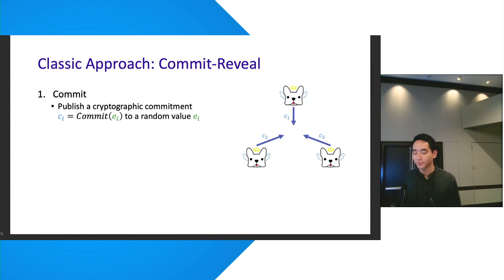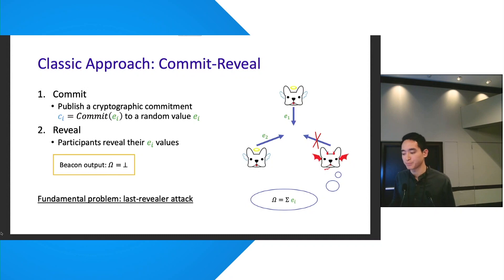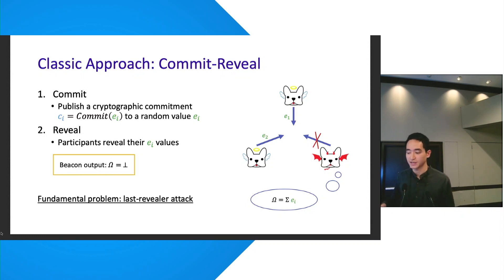To prevent this, a classic approach called commit-reveal utilizes cryptographic commitments. It introduces a preliminary commit phase where participants publish a commitment to their entropy values, and only then can they reveal their values for the beacon output to be computed. However, there's still a fundamental problem called the last revealer attack, where the last revealer cannot fix the output to a fixed value but can pre-compute it in advance and abort during the reveal phase if the result is not to their liking.